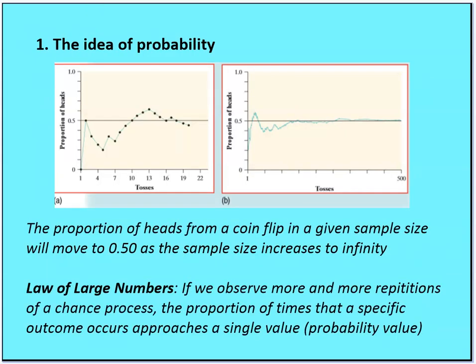Here is a look at two diagrams where a coin was flipped a certain number of times for each set. There were several sets in which the coin was flipped, and the proportion of times that a heads was flipped, given the sample size of the number of tosses, is listed here.